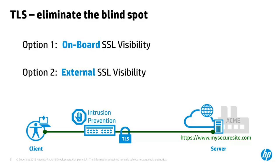So there are two options to eliminate the blind spot. Both options involve decrypting TLS for inspection and then re-encrypting it, transparently for the client and the server. With option one, we do that within the intrusion prevention system — on board, so to say. With option two, we use a dedicated external solution and do the decryption on a separate system. In this tech talk we will focus on option two, which we implement with our technology partner BlueCode and the BlueCode SSL Visibility Appliance.